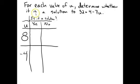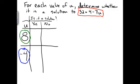So I have a problem here that asks, for each value of u, determine whether it is a solution to the equation 32 equals 4 minus 7u. So I'm going to check to see if these two solutions, 8 and negative 4, if either of these are a solution to this particular equation.